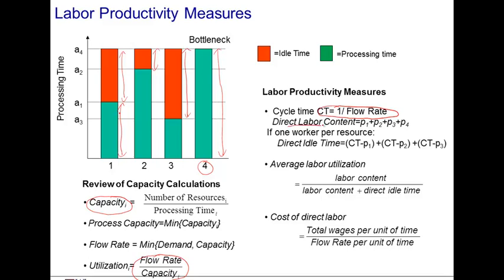Next, we define the direct labor content as the sum of the processing times — simply the sum of the green bars in the previous picture. We then define for each resource the idle time as the difference between the cycle time and the processing time. So the idle time for the first resource is exactly that difference. We can add the idle time up across all resources to get the total idle time.